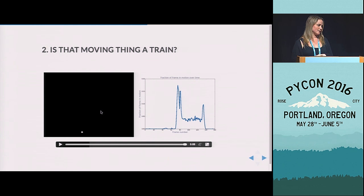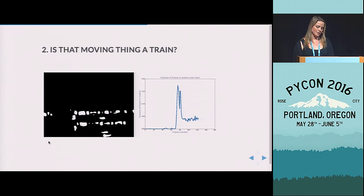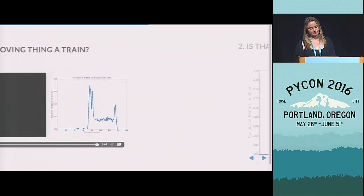So one way to look at this is, is enough of the frame actually in motion to be considered something that's as big as a train? So if we look at the fraction of this frame that's actually considered in motion over time, we can plot that fraction over time. And so here you have, right when the train comes in, you have a lot of motion detected.